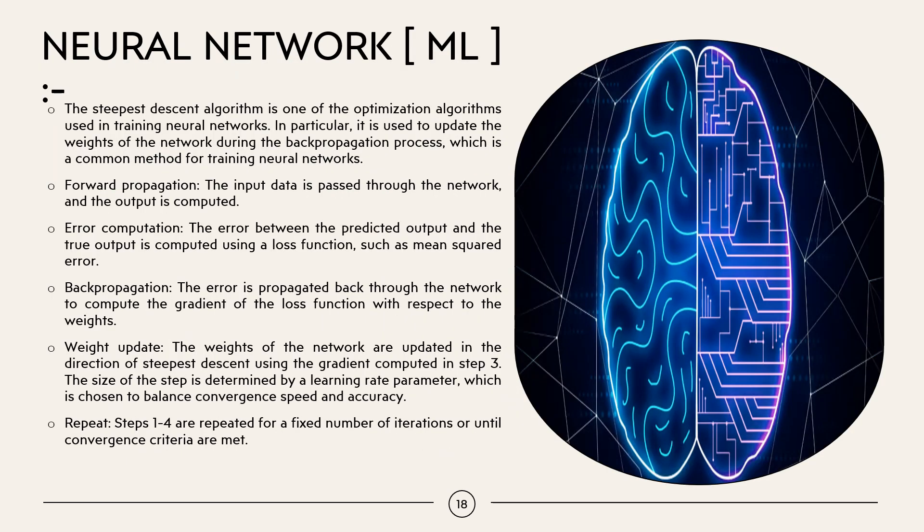So, it is also used in neural networks. The steepest descent algorithm is one of the optimization algorithms used in training neural networks. In particular, it is used to update the weights of the network during the back propagation process which is a common method for training neural networks. Forward propagation: The input data is passed through the network and the output is computed. Error computation: The error between the predicted output and the true output is computed using a loss function such as mean squared error. Back propagation: The error is propagated back through the network to compute the gradient of loss function with respect to the weights. Weights update: The weights of the network are updated in the direction of steepest descent using the gradient computed in step 3. The size of the step is determined by learning rate parameter which is chosen to balance convergence speed and accuracy. Repeat: steps 1 to 4 are repeated for a fixed number of iterations or until the convergence criteria are met.